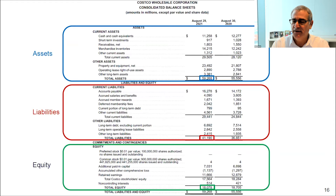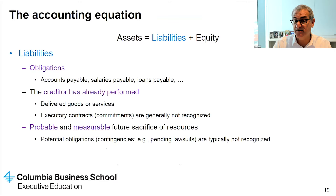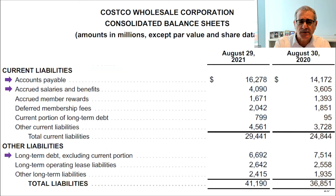For example, if the supplier has already delivered to you, that creates a liability. Contingencies means there is a potential for a liability — like a pending lawsuit. But if the probability that we'll have to pay is not high enough — in the U.S. it's typically 75%, under IFRS it's 50% — we don't recognize it. The major liabilities that Costco reports are primarily accounts payable, long-term debt, and accrued salaries and benefits.